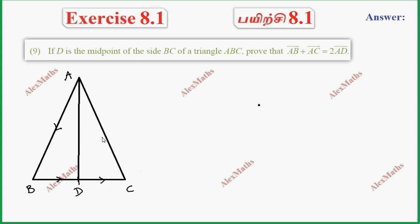Then AC is the closing side AB, BC. Then AC is CA. So AC is the closing side — that's why this is the closing side. We have the direction.